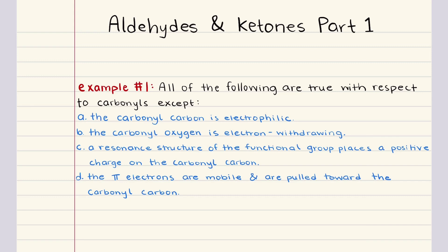Problem number one says all of the following are true with respect to carbonyls except blank. The carbonyl group is characterized by a carbon-oxygen double bond, and we want to keep this structure in mind as we analyze each option carefully.